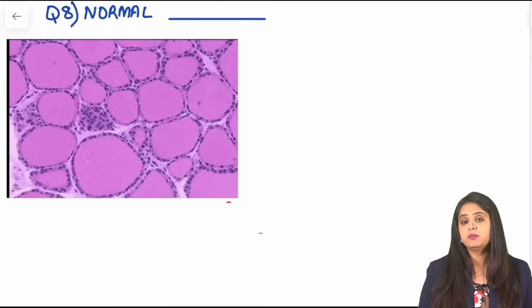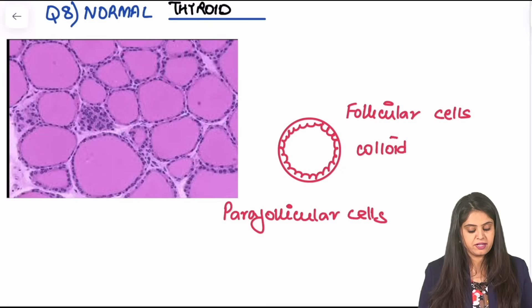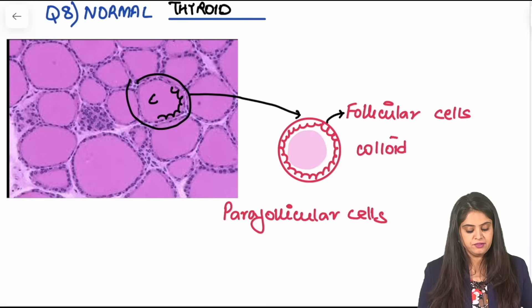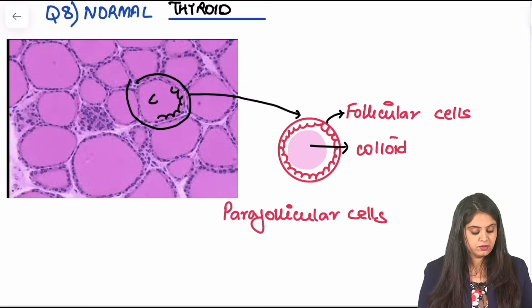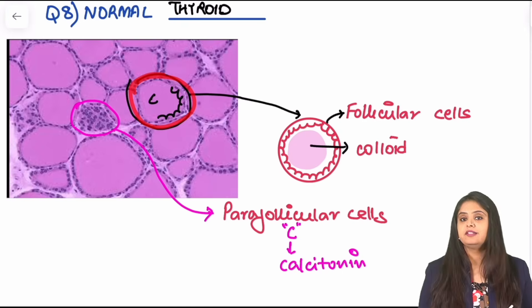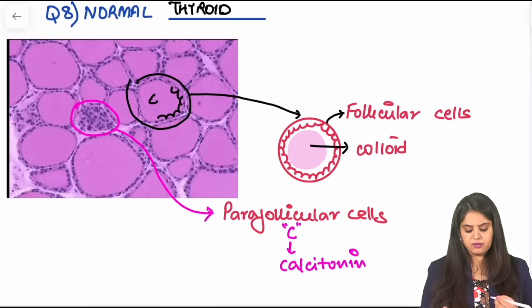Question eight: even normal photos can come. Which organ is this? This is the thyroid. The normal thyroid looks like this in anatomy and histology. All these round structures are the thyroid follicles. They are lined by follicular cells. The pink color material present inside them is the colloid. Outside the follicular cells, the bundles of cells are the parafollicular C cells, which in physiology release calcitonin.